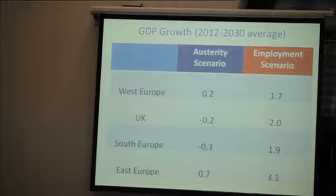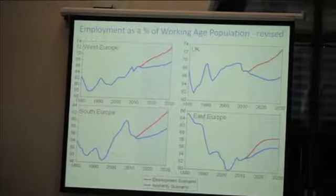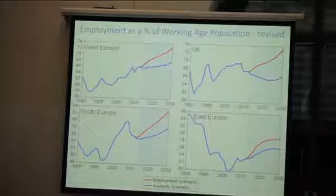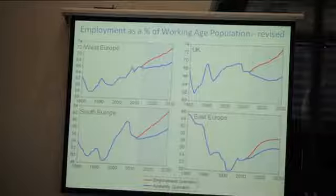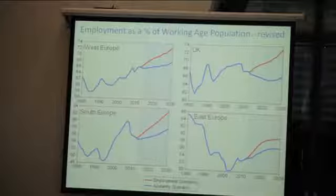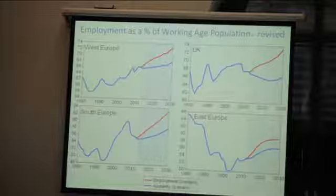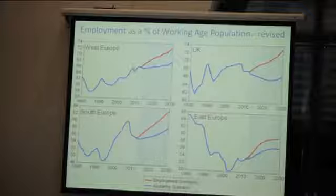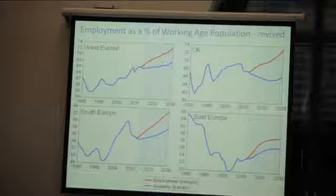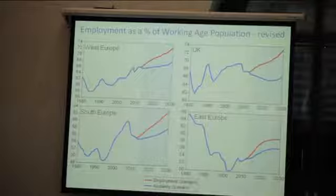Looking at employment as a percentage of the working age population, you'll see that it's been gradually rising since the 1980s pretty much across the blocks. The working age population across Europe is actually decreasing over time, so it's not that off the mark to expect this percentage to rise due to demographic reasons. The red line is the employment scenario — the more positive one — and the blue line is the austerity or business-as-usual scenario.